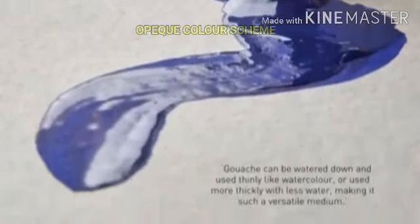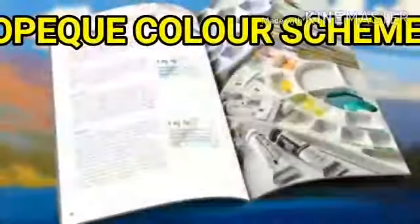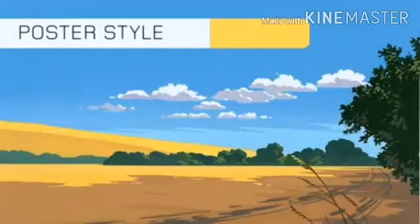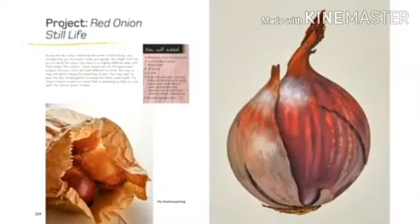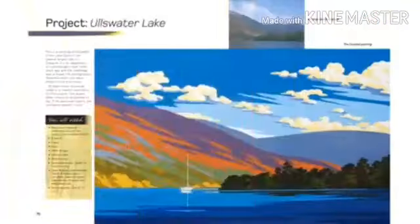Gouache is a painting with non-transparent color scheme, using a binding agent, usually gum. Gouache is similar to watercolor and tempera painting. It is also called body color and its lighter tone contains white color.